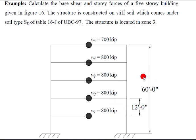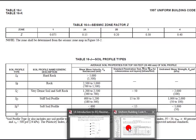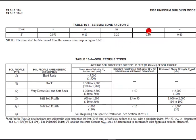So the story height is 12 feet and the height of the building is 60 feet. Now come to the solution. First of all, for zone 3 and HD soil, I use UBC 97. So for zone 3, the Z value is 0.030.